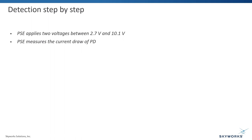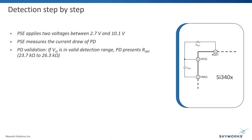When the input voltage is in the valid detection range, PD presents an external R-DAT detection resistor to indicate to PSE that a valid PD is connected. Its value must be between 23.7 kΩ to 26.3 kΩ.